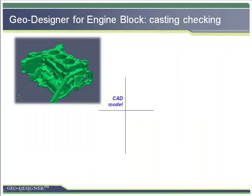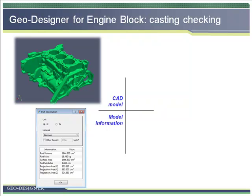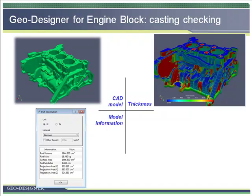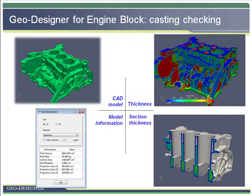This is another example for engine block design. The casting material is aluminum. GeoDesigner can provide detail information of the part, such as mass, volume, surface area, and casting modulus. For engine block design, the thinnest section and thickest section are important. GeoDesigner can be used for thickness checking and detail section thickness checking.